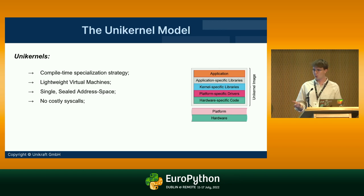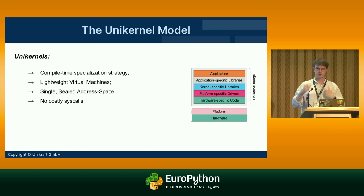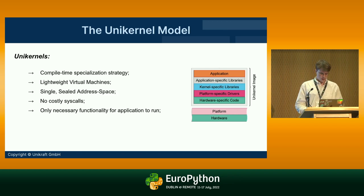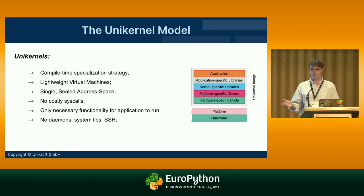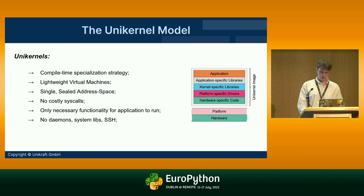There are no syscalls in the traditional sense. Syscalls like open, socket, and close normally incur around 300 CPU cycles of privilege checking; because this syscall is now a function call, it's like 4 CPU cycles. There are no daemons running in the background, no system libraries you don't need, and no SSH by default — which is a big attack vector for many virtual machines. These are the key characteristics of unikernels, and they're naturally platform and hardware specific.